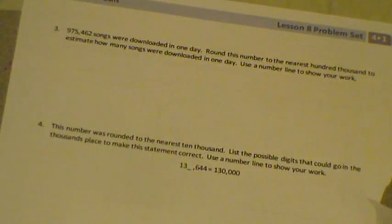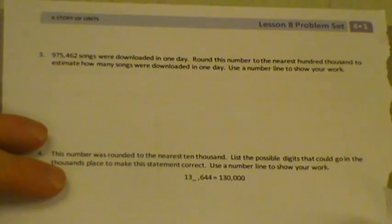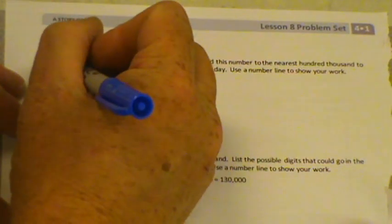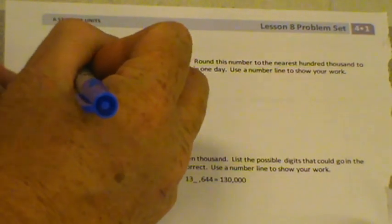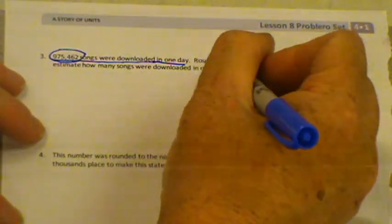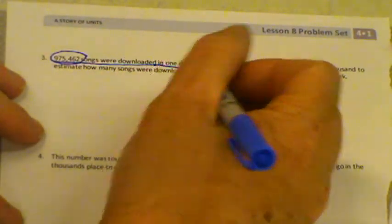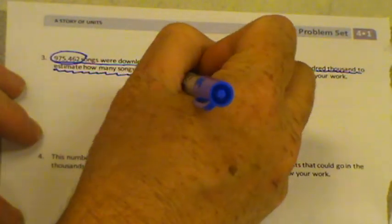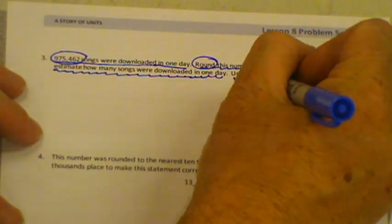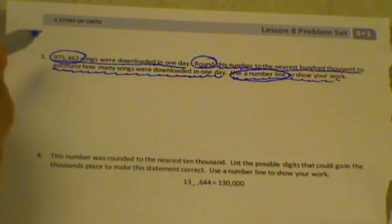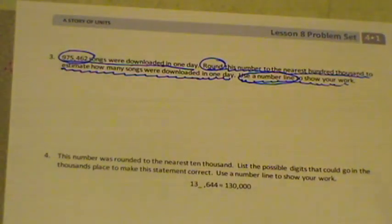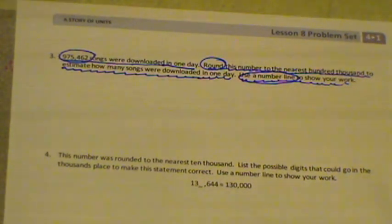So we would round this number. And these are some pretty complex problems where we really have to read carefully. Remember, we read, draw, and write in Eureka Math. So it says 975,462 songs were downloaded in one day. That's something we know. And I'm going to circle that number. Round this number to the nearest hundred thousand to estimate how many songs were downloaded in one day. So this is what we need to do. Some squiggly line here and circling round. I also need to use a number line to show your work. So I'm going to circle, use a number line. So now I'm all set up. I've got to round, use a number line, and this one is the number I'm rounding. And I'm rounding it to what place value? The nearest hundred thousand.